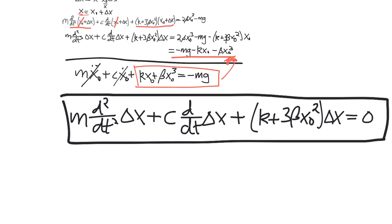The final linearized differential equation is expressed in coordinates that describe perturbations about the operating point X-naught. The variable delta X expresses how far we are from that operating point. If we stray too far, the model will lose accuracy; if we stay close, it should work well. That's it for linearization and writing equations of motion in terms of perturbations. Check out the other video where I go through an example of linearizing the aircraft equations of motion.